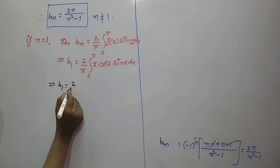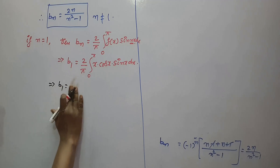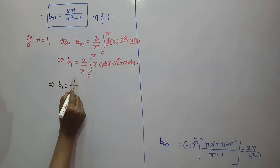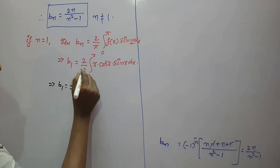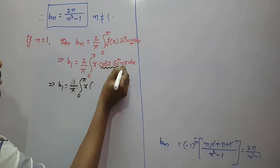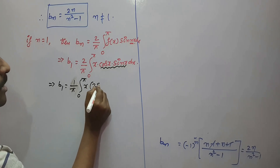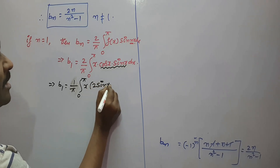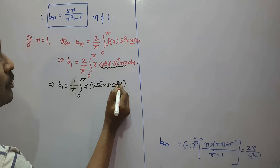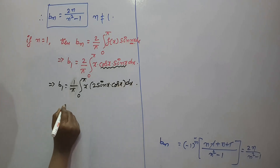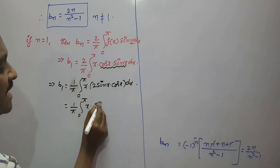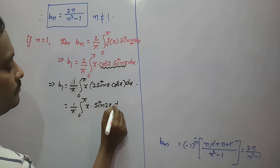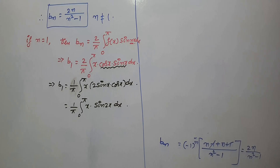So we need to evaluate this integral again. b₁ = (1/π) · integral from 0 to π of x · 2·sin(x)·cos(x) dx. We know that 2·sin(x)·cos(x) = sin(2x), so b₁ = (1/π) · integral from 0 to π of x · sin(2x) dx.